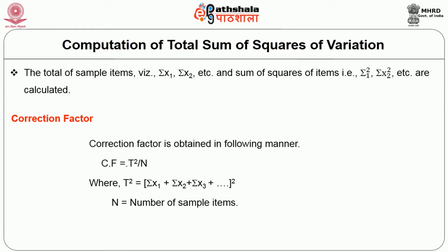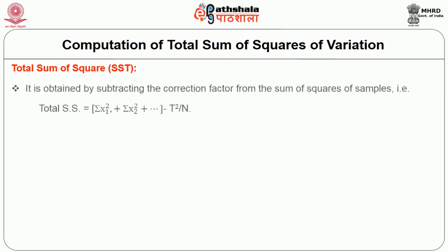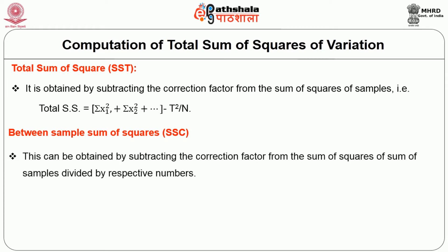A correction factor is then obtained as: CF = T² ÷ N, where T = ΣX₁ + ΣX₂ + ΣX₃, and N is the total number of sample items. Next, the total sum of squares is calculated by subtracting the correction factor from the sum of all squared items: SST = ΣX₁² + ΣX₂² + ... − T²/N. The between-sample sum of squares is obtained by subtracting the correction factor from the sum of (each sample total squared divided by its respective sample size): SSC = (ΣX₁)²/N₁ + (ΣX₂)²/N₂ + ... − T²/N.